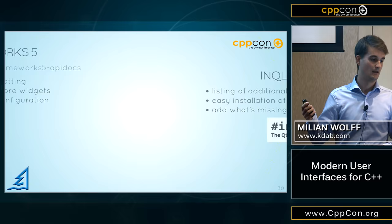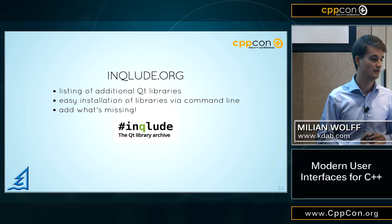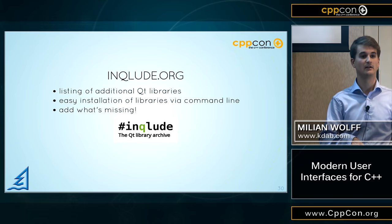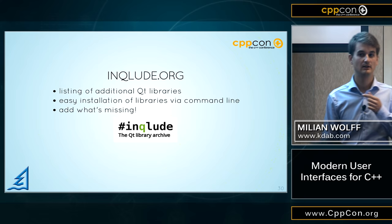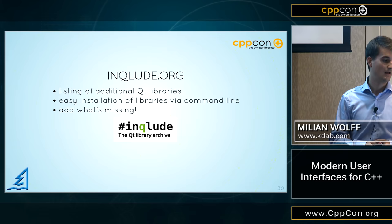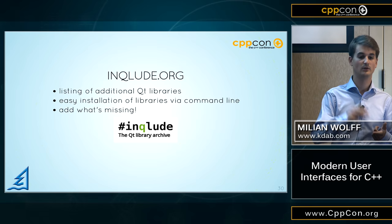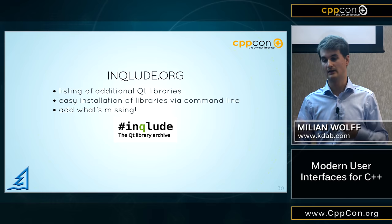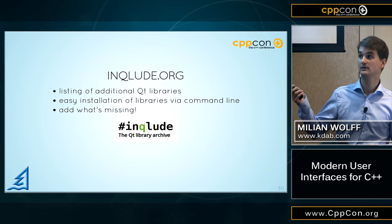Then there's inqlude.org, founded by Cornelius Schumacher, also from KDE fame. It's meant to give you a central website where you can go to if you're looking for anything that's missing in Qt. At the moment, it lists 184 Qt libraries that solve various problems. It makes it very easy to install them — it shows you the library, the license, where to get it, even a Ruby tool to install stuff via the command line and update it. If you use Qt, do have a look here if you ever find anything that's missing.